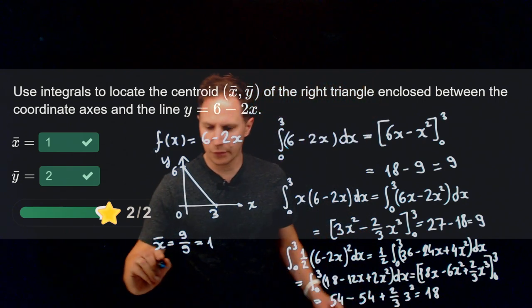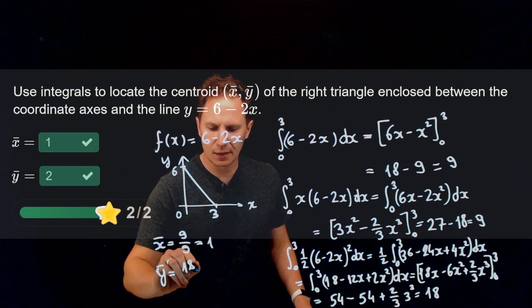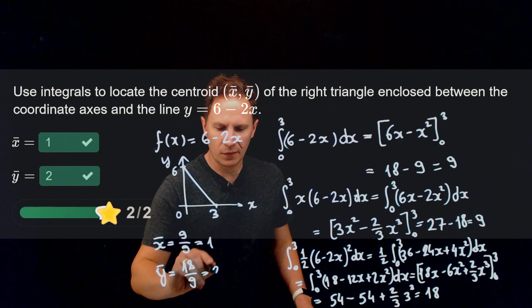So therefore, for the y-coordinate of the centroid, we get 18 over 9, and that is indeed 2.